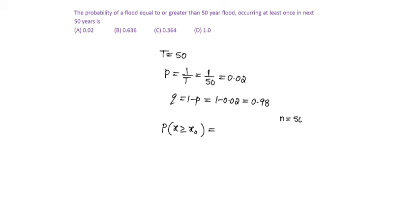So N is equal to 50. Occurring at least once means 1 minus probability of not occurring at least once, that is equal to 1 minus probability of not occurrences, Q to the power N, that is equal to 1 minus 0.98 to the power of 50, which is equal to 0.63.